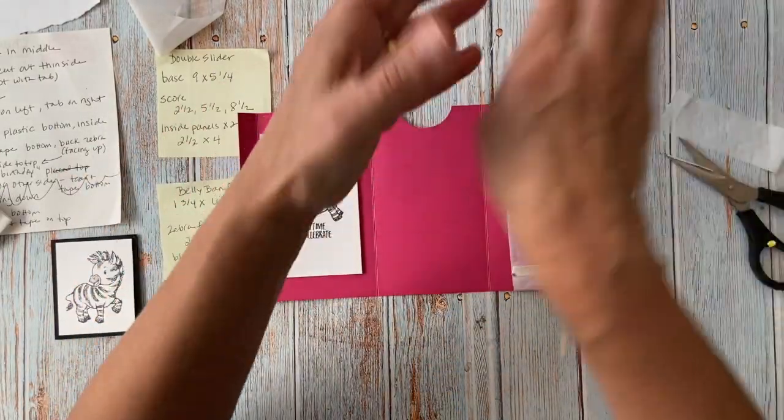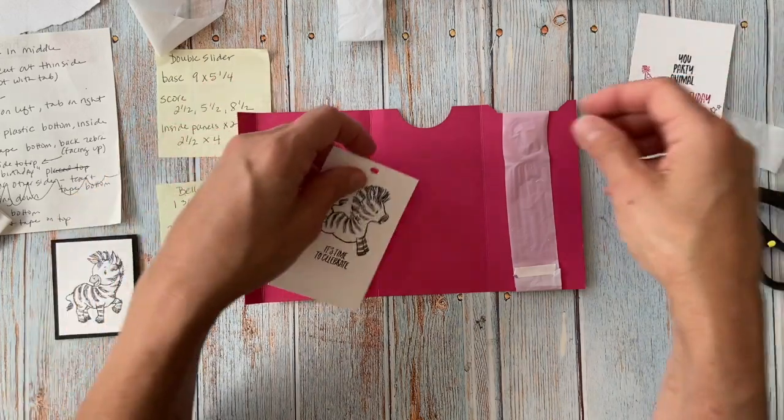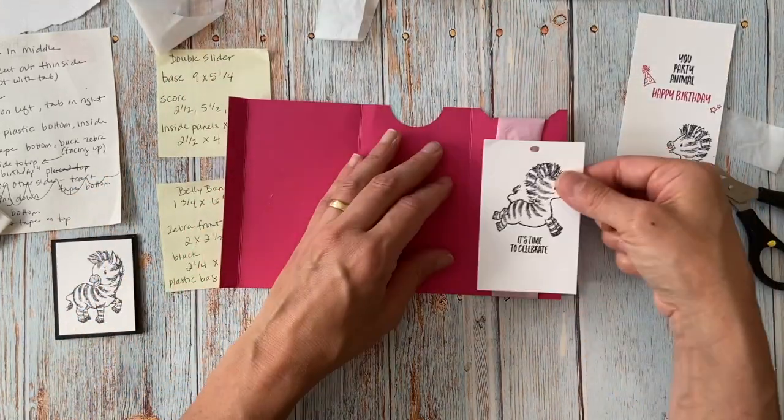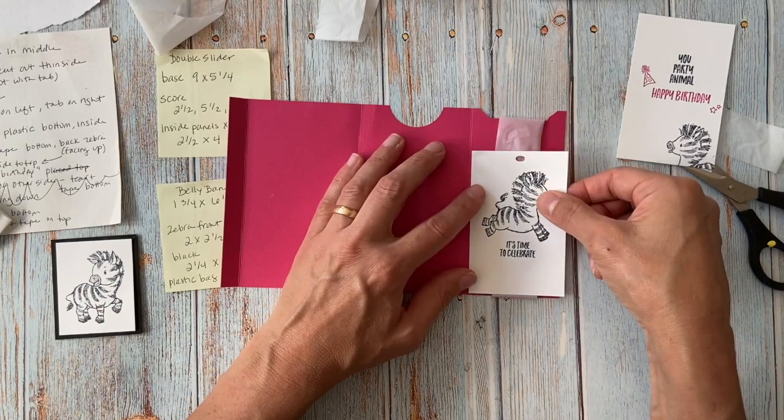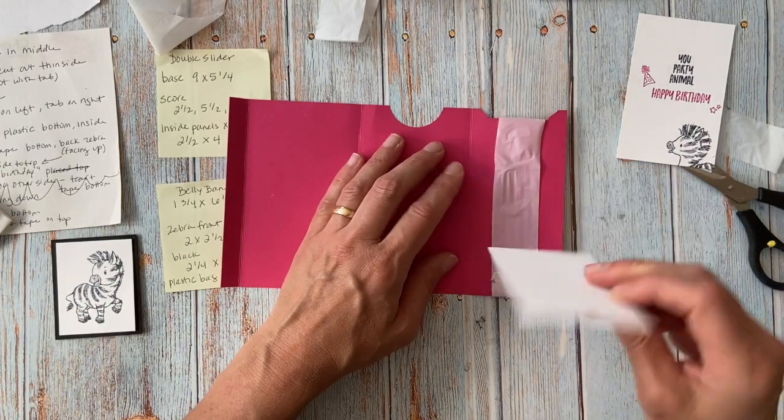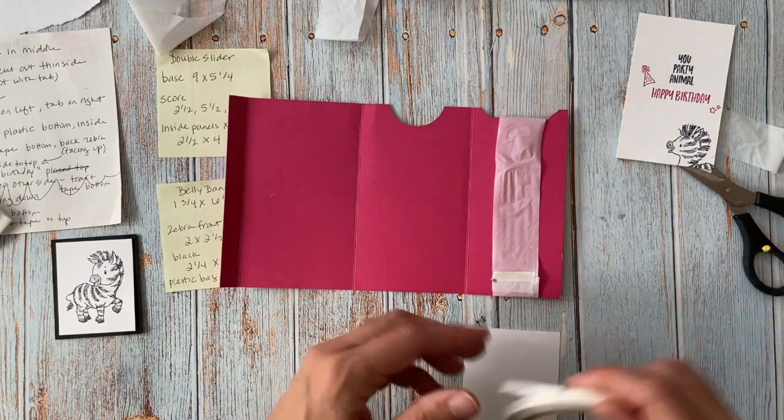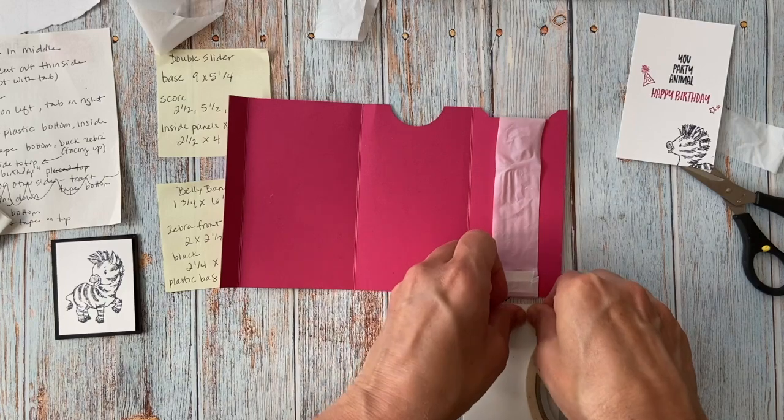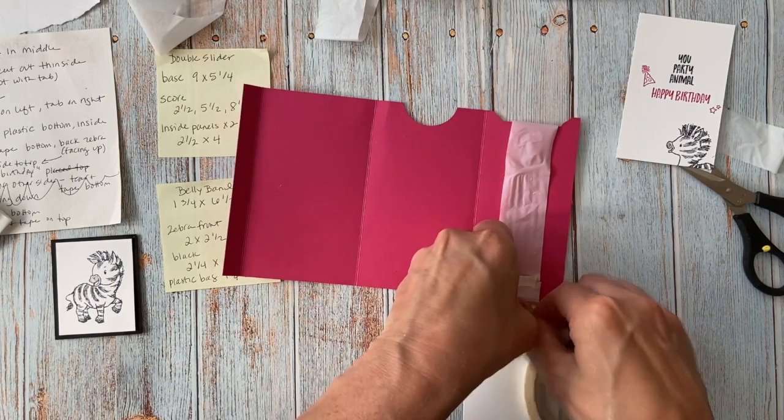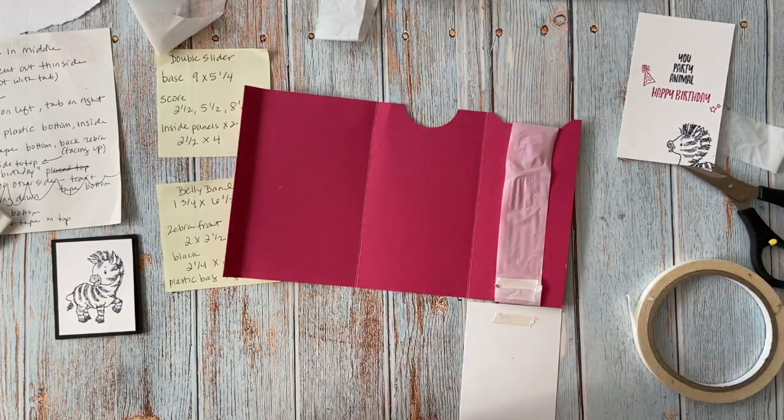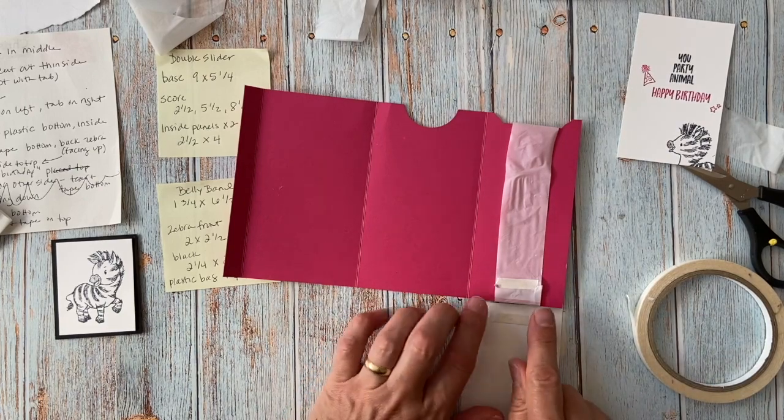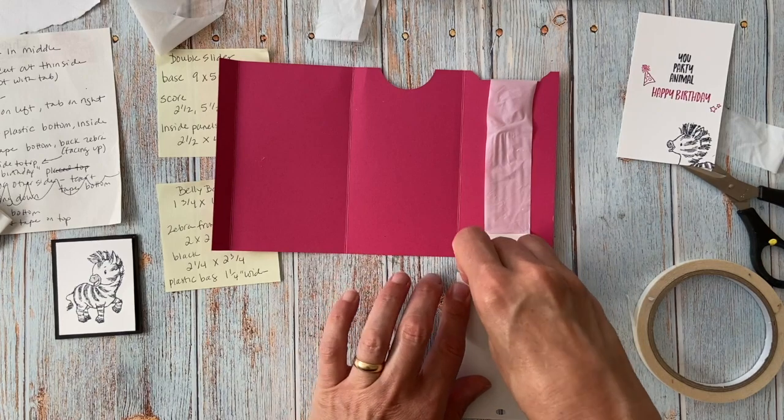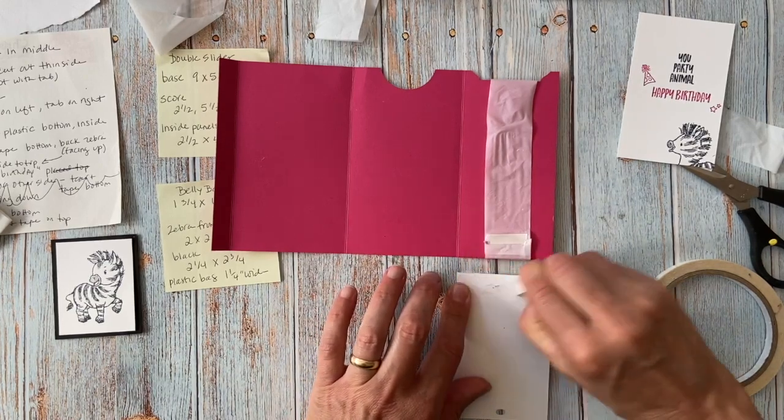So then we're going to take our, I'm just using my model here so I don't mess up. We're going to take our top piece and we're going to tape it. So I'm just going to use, I'm actually going to line it up. I'm going to use some tear and tape and you do kind of want to use tear and tape because it's an interactive card. So you don't want it just to kind of come off, but I don't want my tape to be any wider than my plastic strip here.